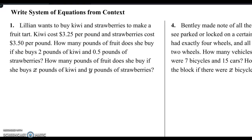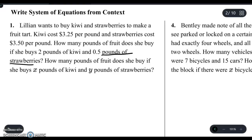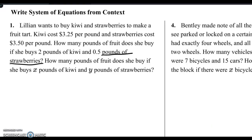This first one here talks about how Lillian wants to buy kiwi and strawberries to make a fruit tart. Kiwi cost $3.25 per pound. Strawberries cost $3.50 per pound. How many pounds of fruit does she buy if she buys 2 pounds of kiwi and 0.5 pounds of strawberries? How many pounds of fruit?